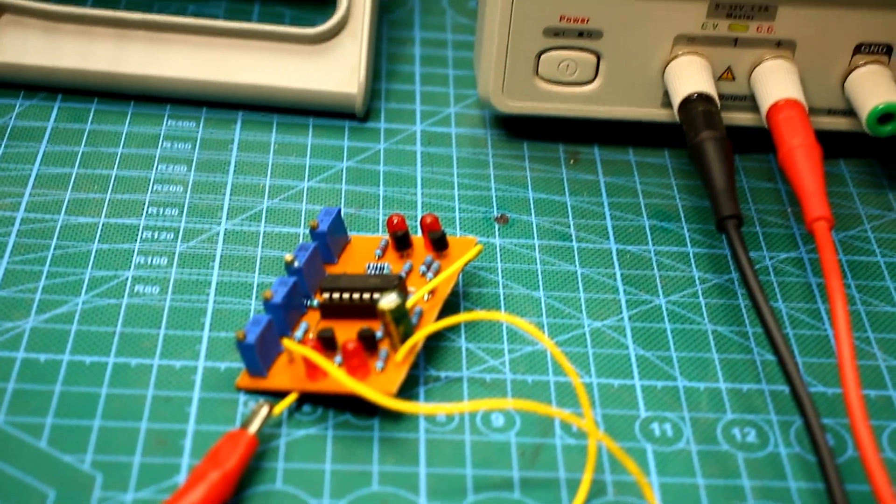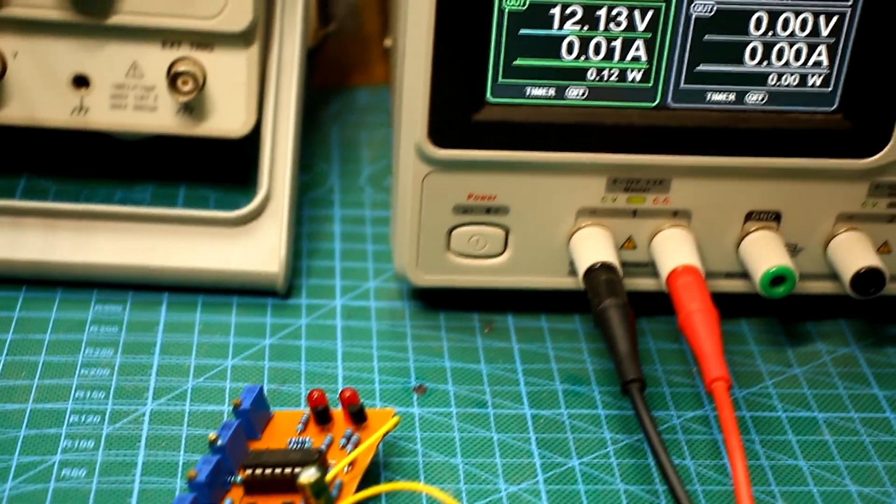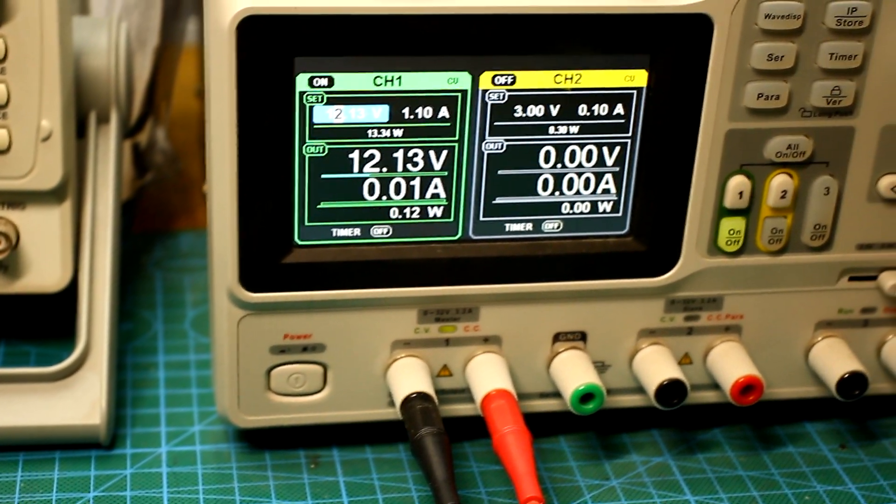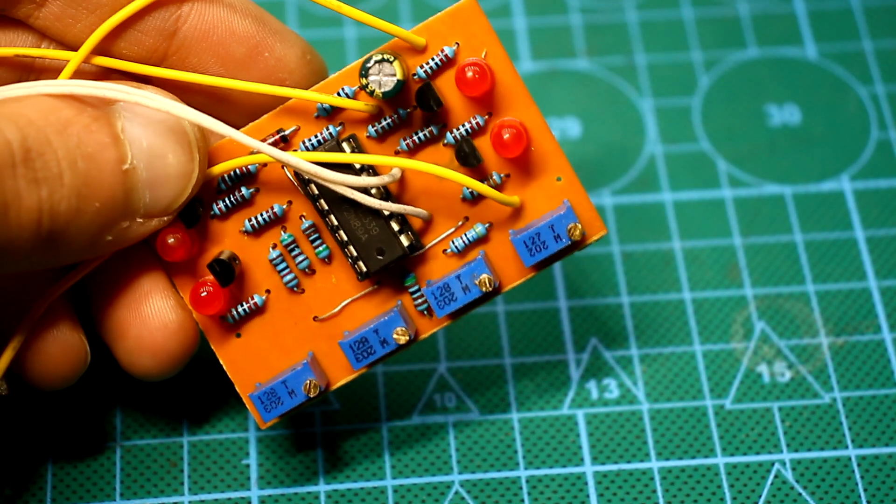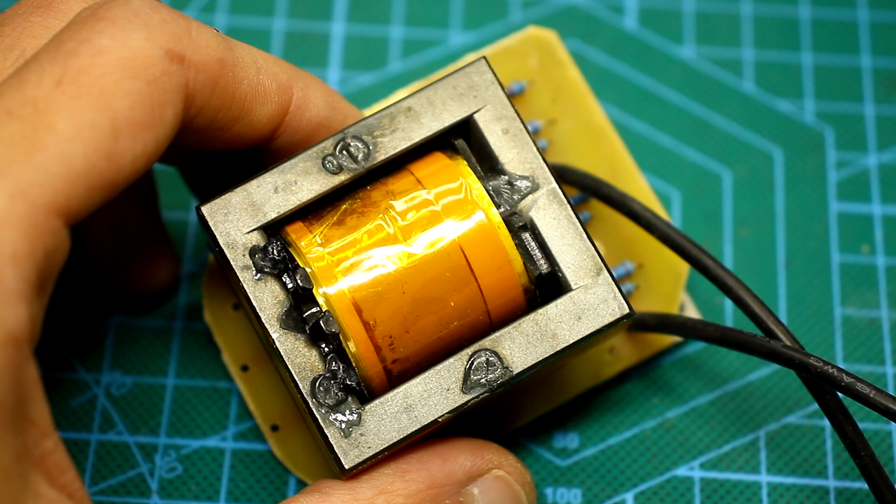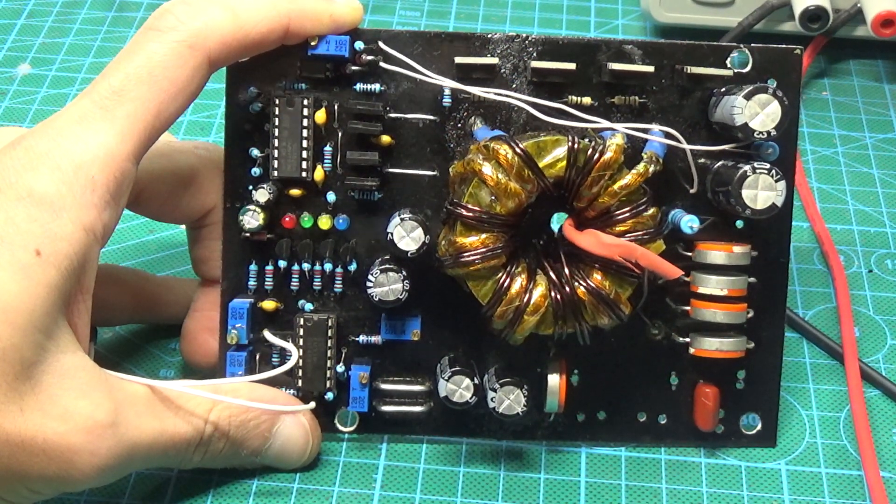The protection system is very economical. If the LEDs don't light up, the consumption from the source of 12V is only from 10 to 15 mA. It is convenient to use the board in voltage converters, chargers and so on. The protection response speed is instant.